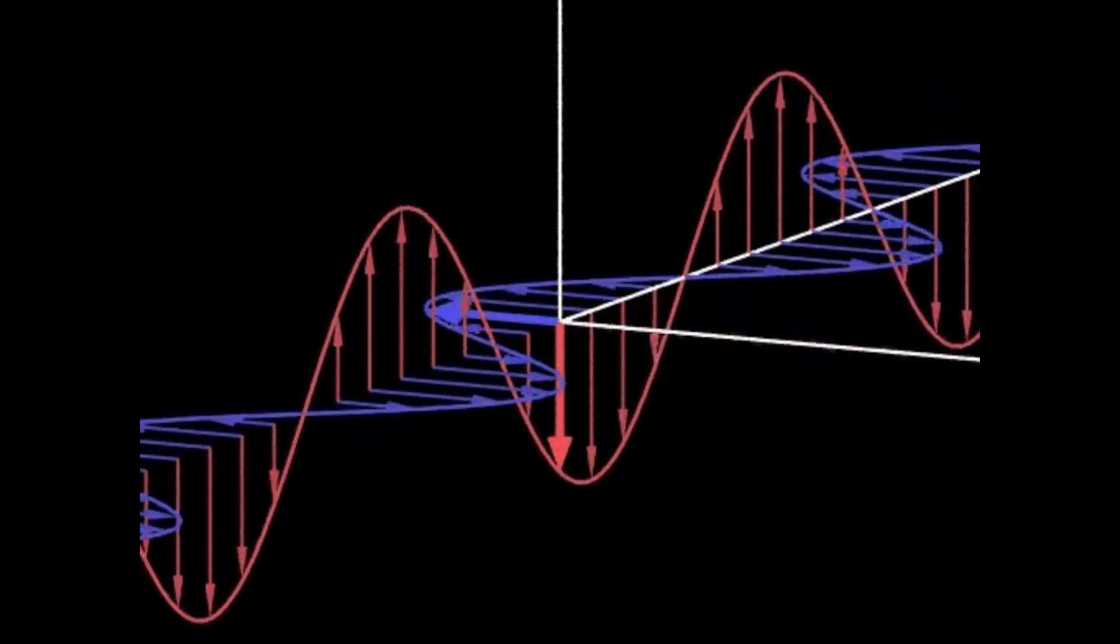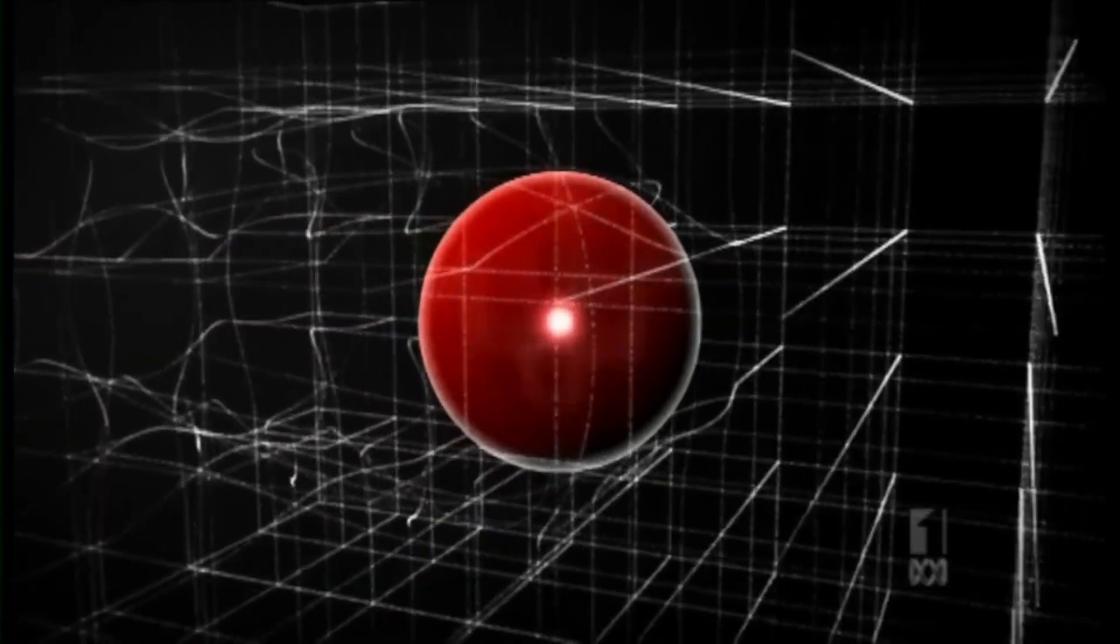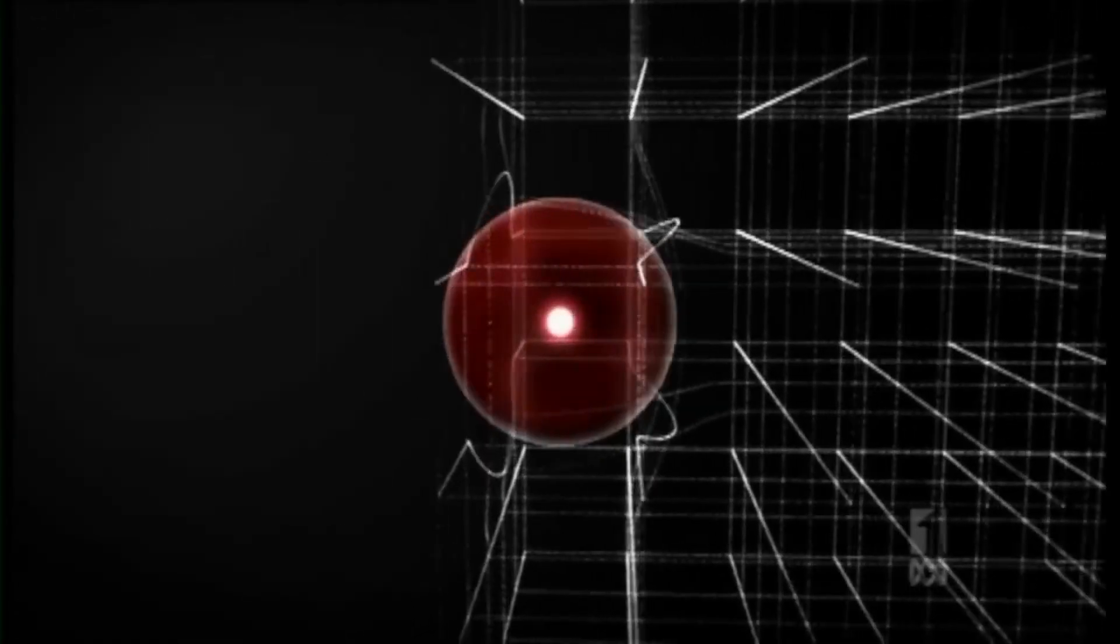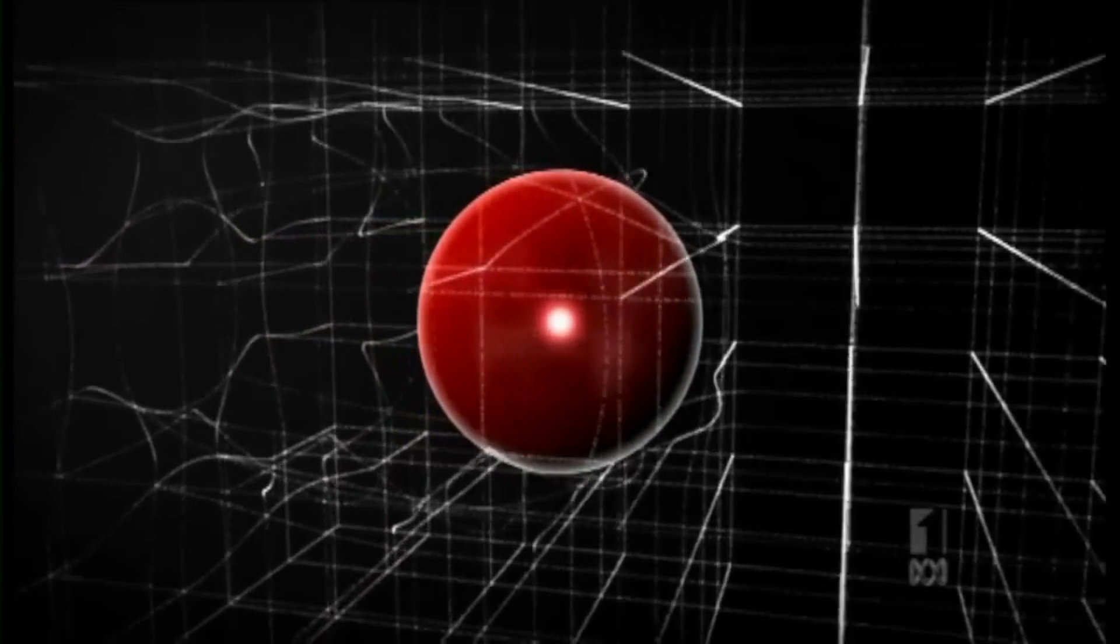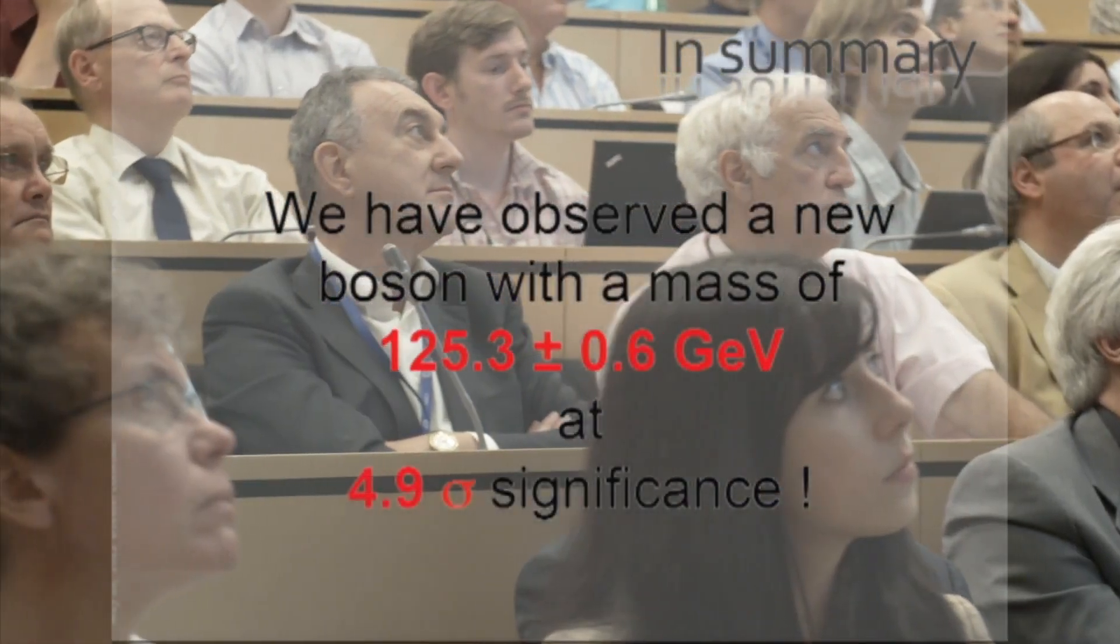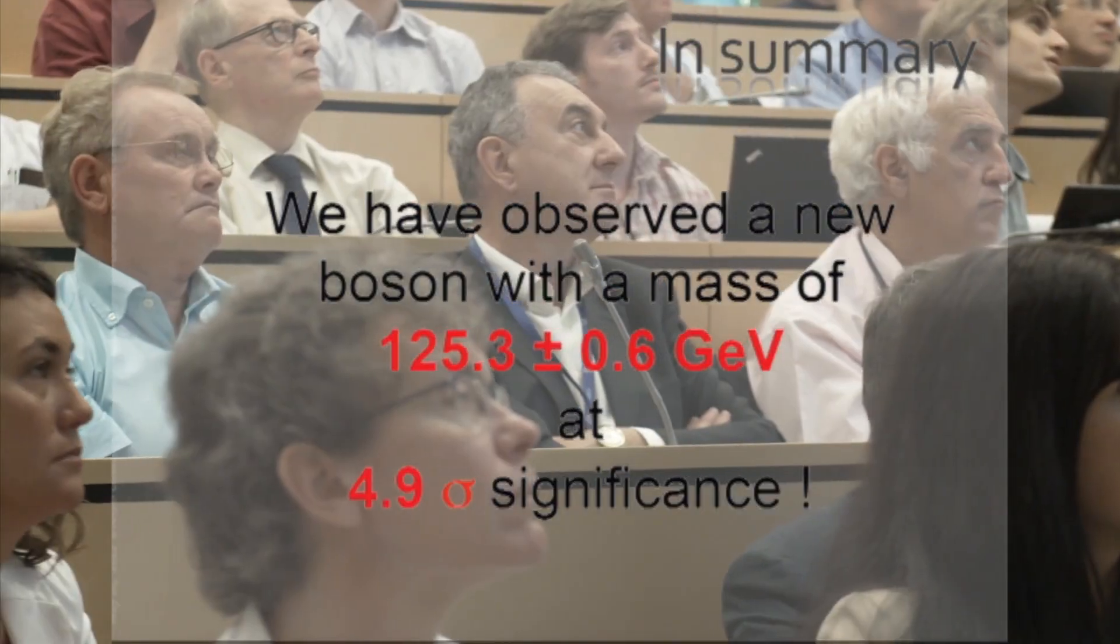There's one field that changed physics forever. The Higgs field. Most fundamental particles, like electrons, should be massless. But they have mass because they interact with the Higgs field, which permeates all space. Think of it like a particle moving through molasses. The stronger it interacts with the field, the more mass it acquires. In 2012, scientists discovered the Higgs boson, a ripple in the Higgs field, at CERN.